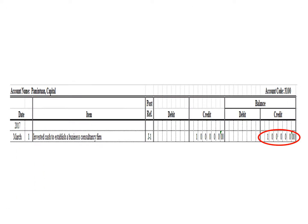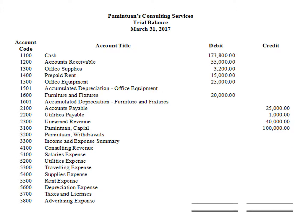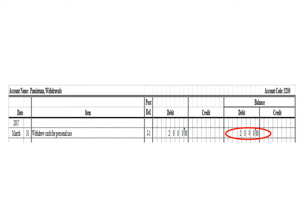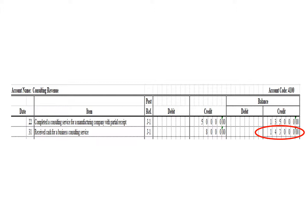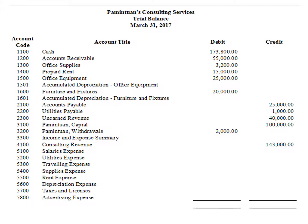Pamin Tuen Capital has a credit balance of P100,000. We write the corresponding balance of P1,000 credit. Pamin Tuen Withdrawals has a debit balance of P2,000. We write Pamin Tuen Withdrawals balance: P2,000 debit. Consulting revenue has a credit balance of P14,000. We write the balance of consulting revenue: P14,000 credit.